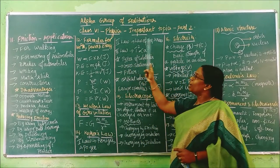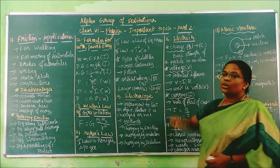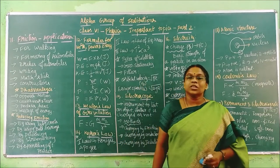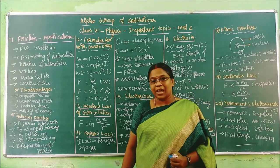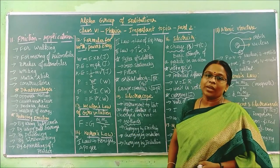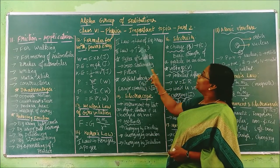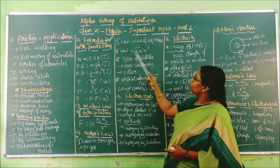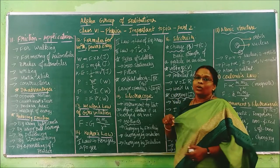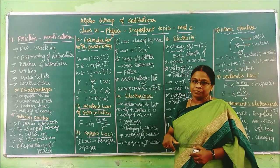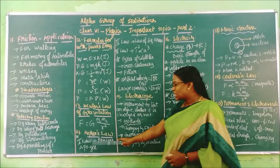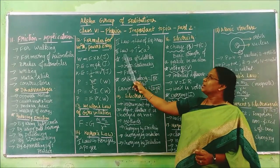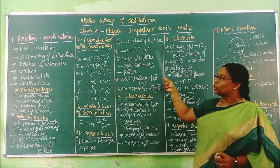The second law is otherwise called the law of equal areas. A question can come: which law is called the law of equal areas? Answer: Kepler's second law. The third law has the equation: T² is proportional to a³ — time period squared is proportional to the cube of the length of the axis.